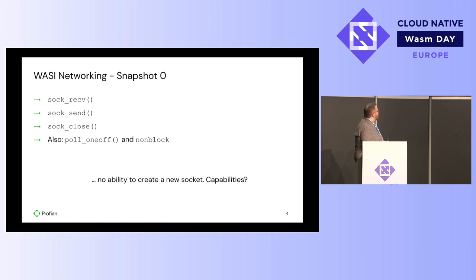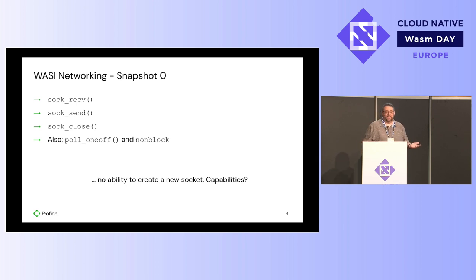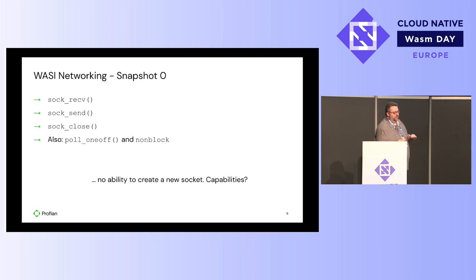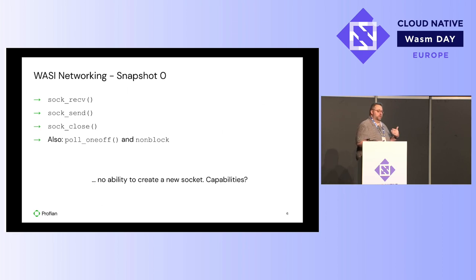Under WASI Snapshot 0, if we just look at the networking calls, we really only had three directly having to do with sockets: being able to receive packets, being able to send packets, and being able to close a stream. It's a remarkably simple API. There are also two other interfaces that sneak in under networking: poll-one-off, which allows you to receive a notification when there is I/O ready on a given file descriptor, and the non-blocking flag, which allows you to set a file descriptor in non-blocking mode.